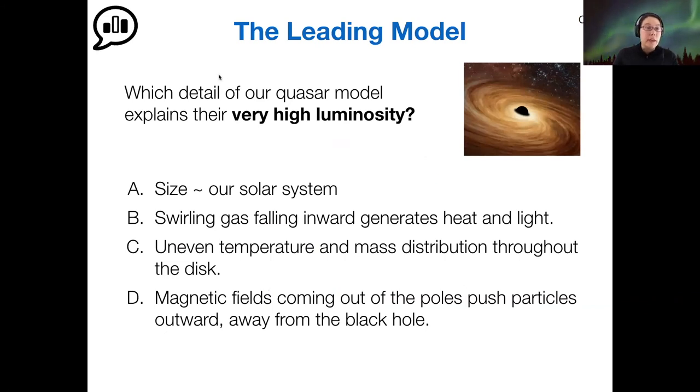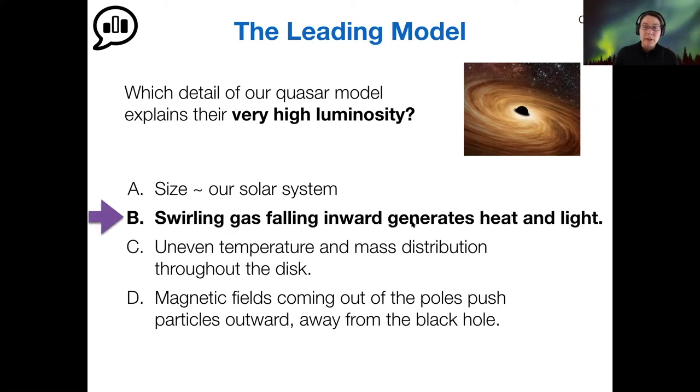So what could explain the very high luminosity that we see from a quasar? For the high luminosity, the best explanation from the model is that there is swirling gas that's falling into the supermassive black hole around the accretion disk, and that is generating heat and light. As we saw in the activity, it's trillions of times more luminous than our sun, which very clearly states that it can't be a star-like energy process. This mass to light conversion around the black hole is the only thing that has the ability to explain this extreme luminosity.